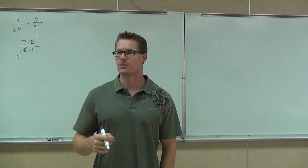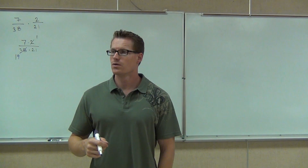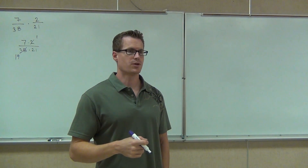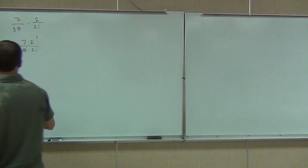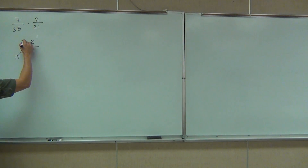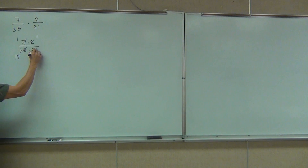Next we'll look for any other numbers we might have. Is there anything else? Seven — what number divides both those? Seven. So we divide by 7: seven divided by seven is one, and 21 divided by seven gives us...